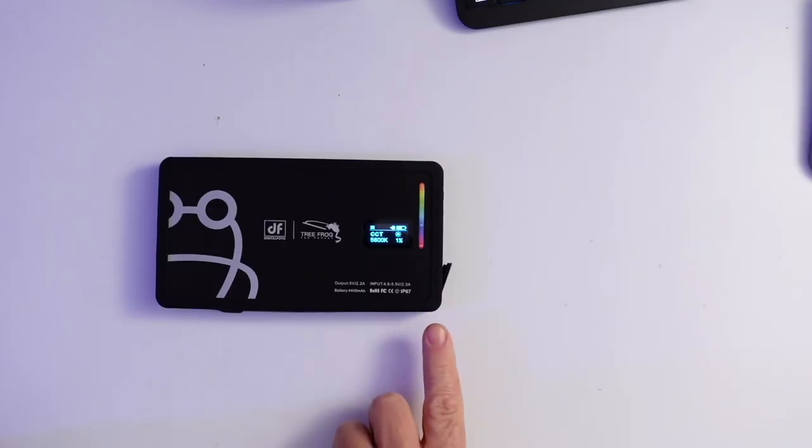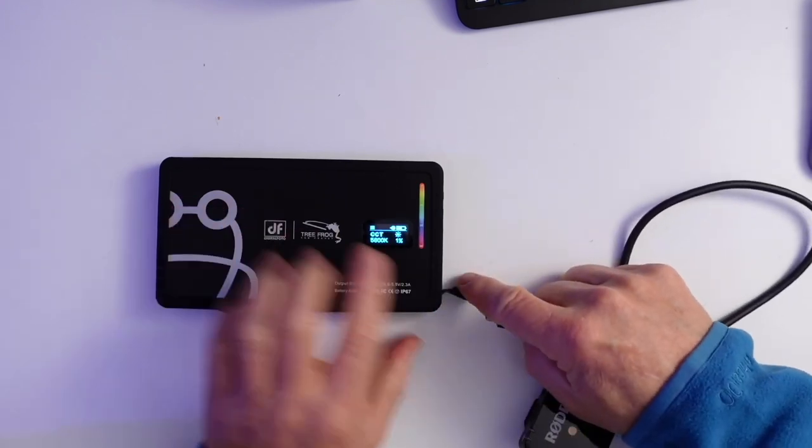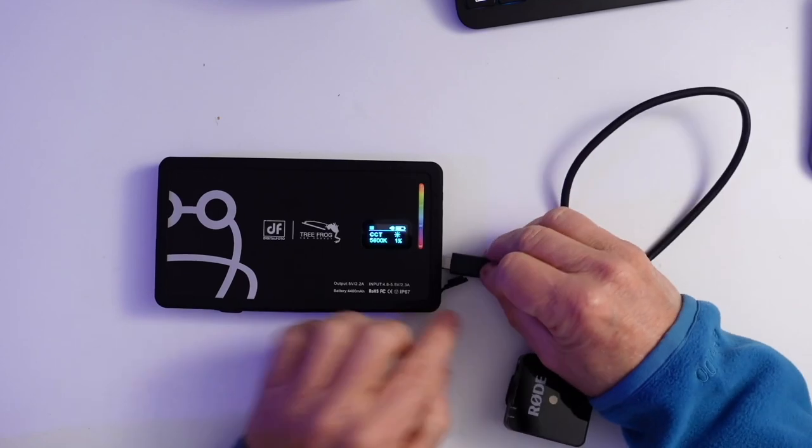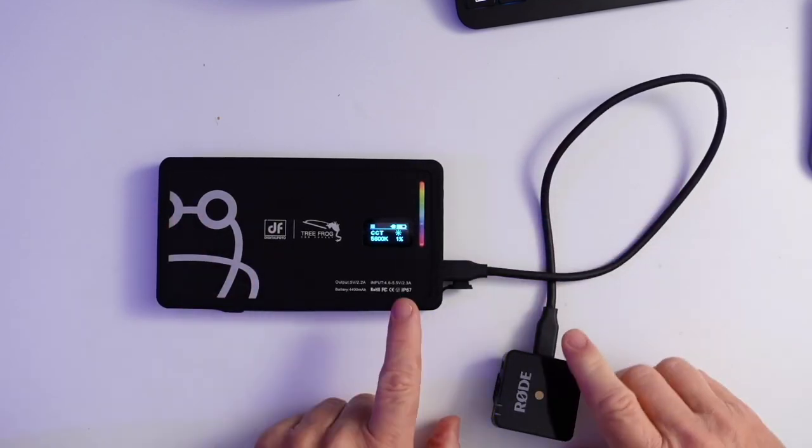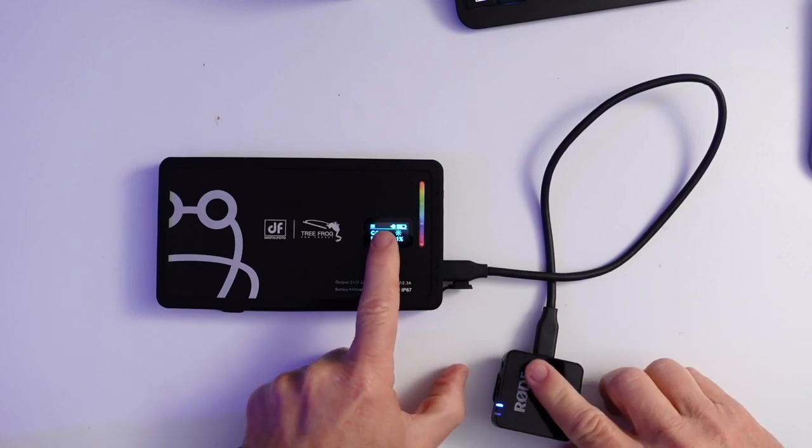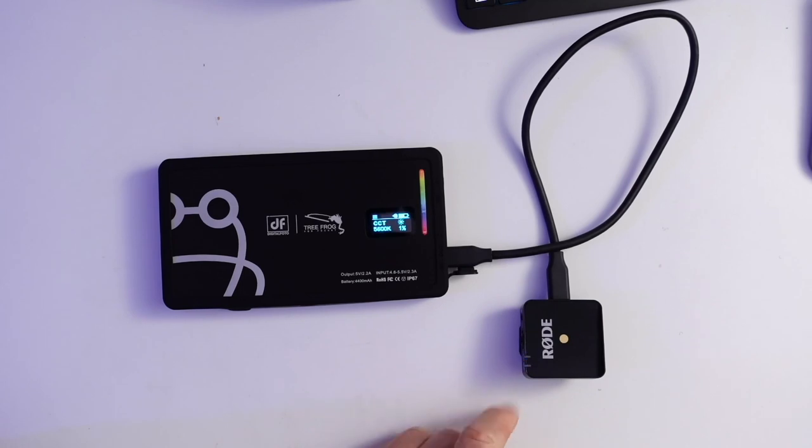So one of the really good things about this unit though is the way you can charge things up. So you just open up the USB-C protector there, stick a USB-C lead in. Immediately you do that, it will show up with a little plug there. And then you can see that it's charging this Rode Wireless Go here. So you could use it for things like charging up cameras, things like that. Your iPhone, if you had that there and that was running out of power and things like that.